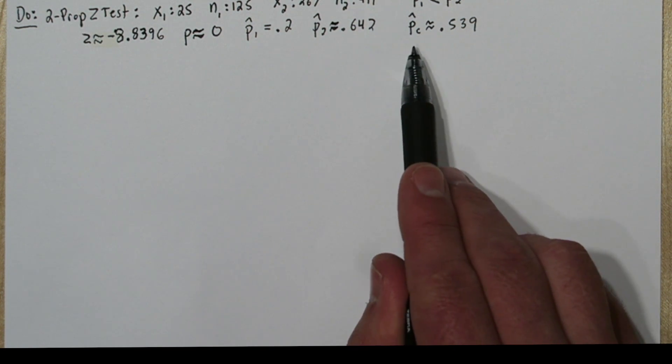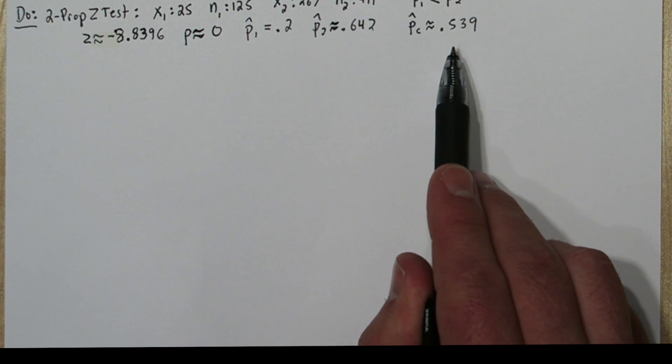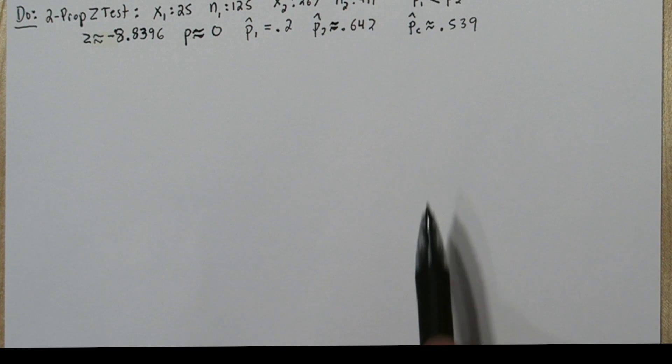Now they give you one more p-hat in the output. I notated it as p-hat sub-c, because what it did was combine the two samples. It looked at how many bat houses overall were occupied, so the 25 tree-mounted plus the 264 building-mounted bat houses, and divided that by the total number of bat houses in both of our samples. So it's a combined proportion. That's why I gave it the sub-note C for combined.